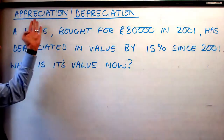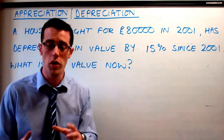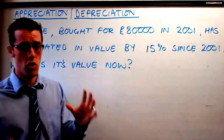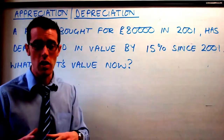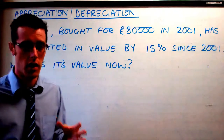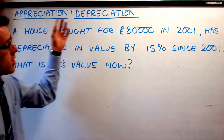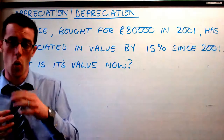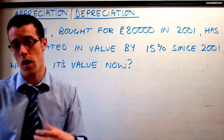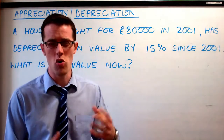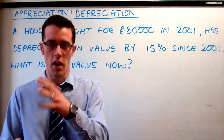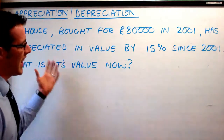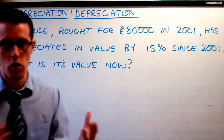Now we're going to look at appreciation and depreciation. We've just seen a percentage increase example, and this time we'll look at a percentage decrease framed in a slightly different way. Appreciation and depreciation just means percentage increase and decrease, but over time — things like the value of a car or a house. The questions are again set in a little context and story.